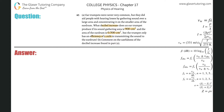We have to find the decibel increase. Decibel refers to sound intensity level, and the variable is beta. When they say decibel increase, that's going to be something like beta 2 minus beta 1. For example, if a pizza costs ten dollars today and seven dollars a year ago, the increase was three dollars — you do 10 minus 7. That's the same idea here.